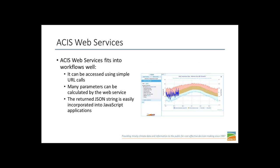ACIS Web Services is a good example of this. You can access it using simple URL calls, and many parameters you might need can actually be calculated by the web service. For instance, it'll do departures from normal for you automatically if you tell it to. You can also do various degree day calculations. This can help save time, reduce the amount of time hunting down bugs, and turn your attention back to the actual product you're making.